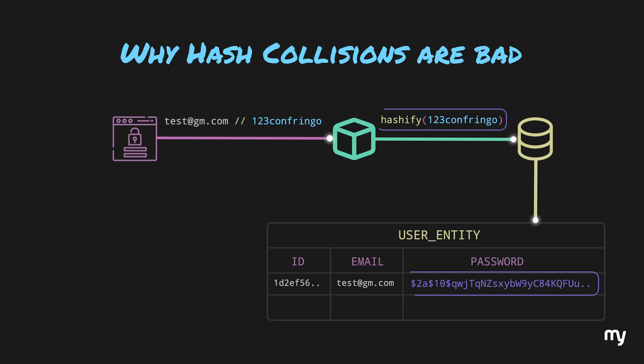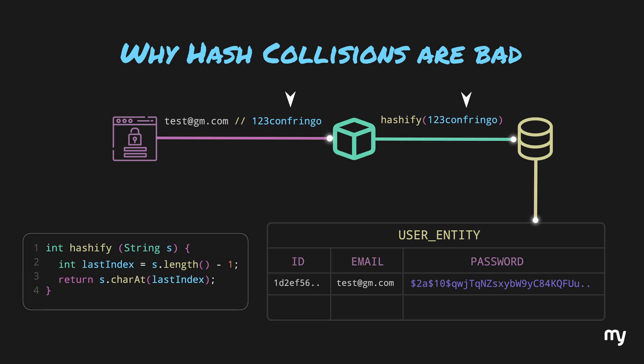Now, if we are using a very bad hash function, like the one we created before and your password was 123confringo, the hash which would be generated and stored in the database would simply be lowercase o. So, when someone tries to login into your account and enters any random string which ends with lowercase o, like 999ascendio, its hash, which would also be lowercase o, would match the database value and the impersonator would successfully be able to login. So, if a hash has a lot of collisions, it is likely that many different inputs can yield the same hash, which substantially increases the likelihood of malicious login. This is the reason why hash functions try to minimize hash collisions.